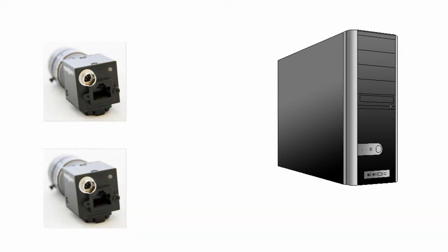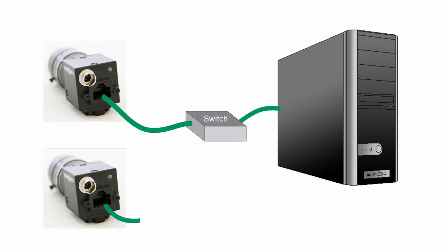Since Ethernet is a network connection, it became possible to connect many cameras to one computer by using hubs or switches. While it is possible to connect cameras to processors over a local network shared by the enterprise, this is usually avoided. Depending on network traffic, it can significantly extend the time to transfer the image from the camera to the processor.